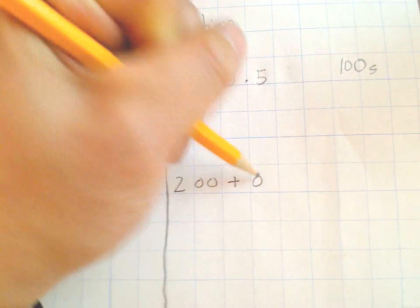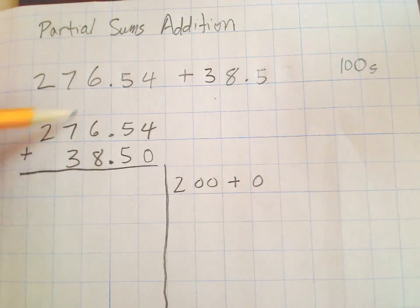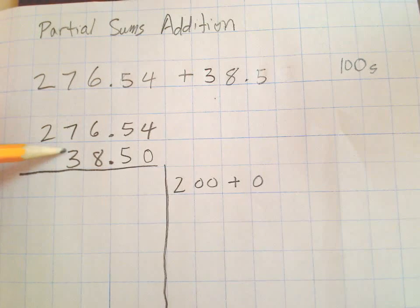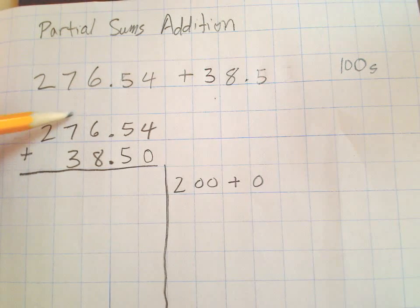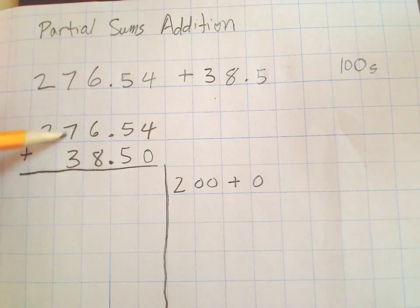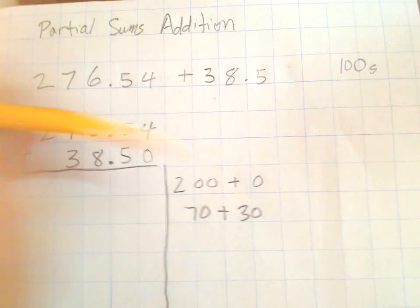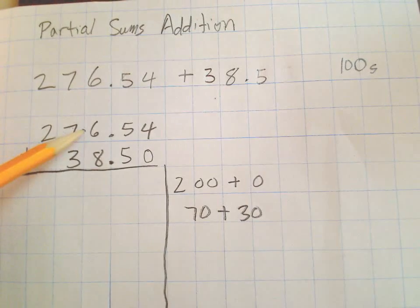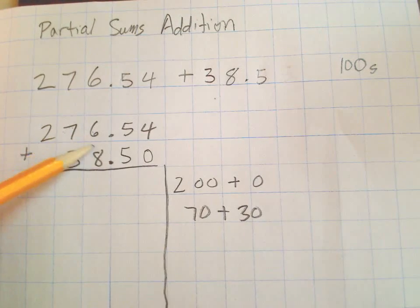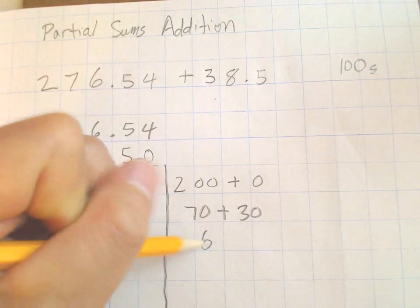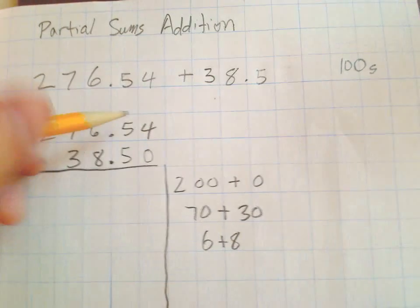So the first thing we want to do is we want to write down 200 plus nothing, zero. Now we go to our tens. We know that we've got 70, because that seven indicates 70, it's in the tens place, so it's 70 plus three tens, 30. Over here in the ones place we've got 6 plus 8, and these are just plain old ones, so we just write 6 plus 8.